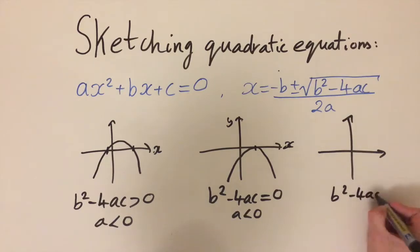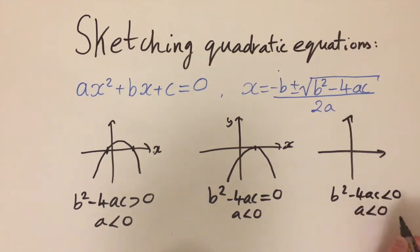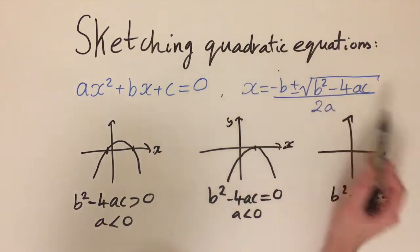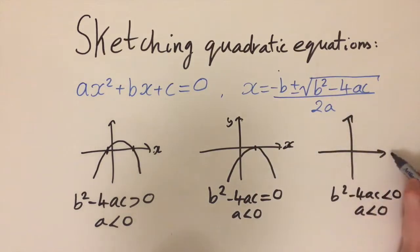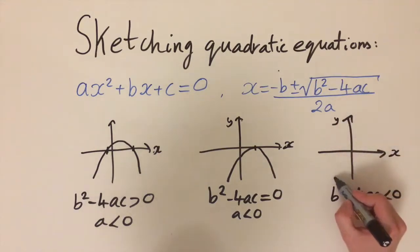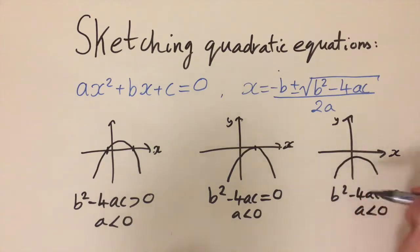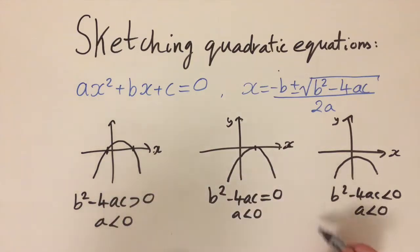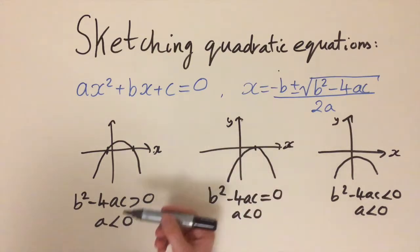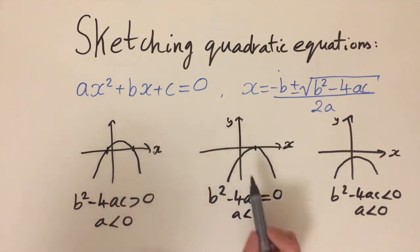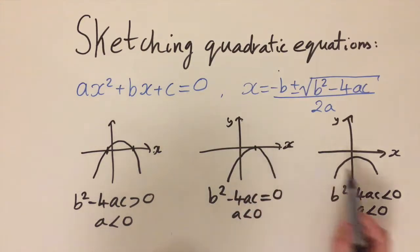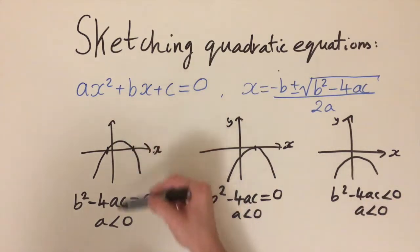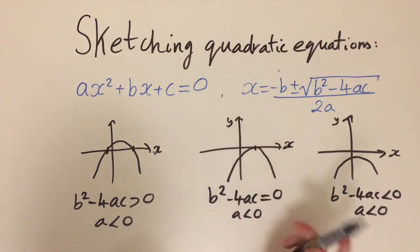When b squared minus 4ac is negative and a is negative, there are no real solutions — at no point does the graph cross the x-axis. The curve goes downward and never crosses. These curves could shift left and right depending on the values of a, b, and c, but in general: discriminant positive gives two solutions, zero gives exactly one, and negative gives none. The sign of a determines whether the curve points upwards or downwards.